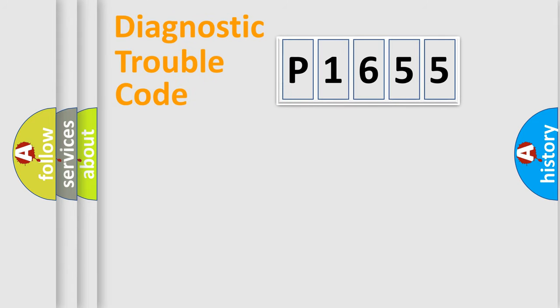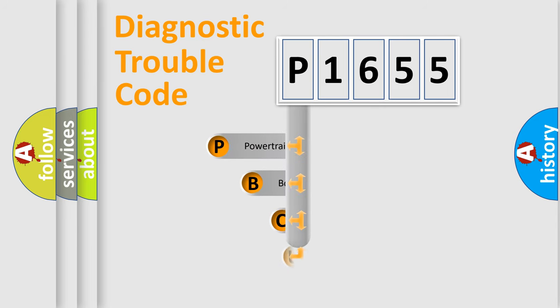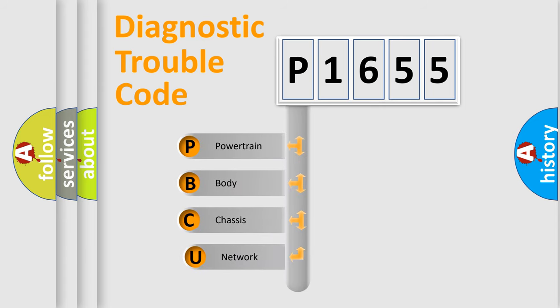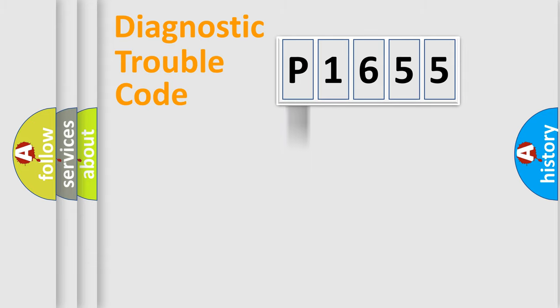First, let's look at the history of diagnostic fault code composition according to the OBD2 protocol, which is unified for all automakers since 2000. We divide the electric system of an automobile into four basic units: Powertrain, Body, Chassis, and Network.